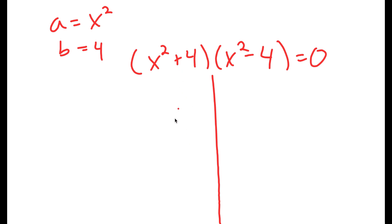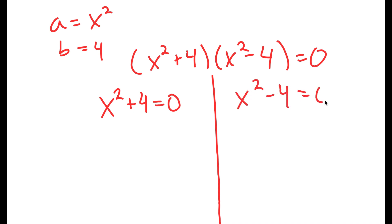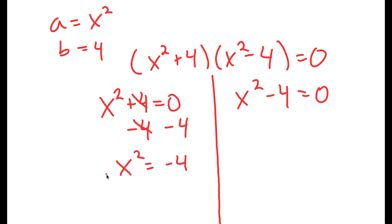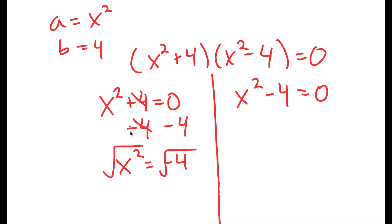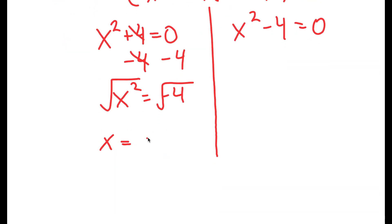Now I can divide this into two equations. I have x squared plus 4 is equal to 0, and x squared minus 4 is equal to 0. For x squared plus 4 equals 0, I'm going to subtract 4 on both sides, so I get x squared is equal to negative 4. And now I'm going to take the square root on both sides. The square root of x squared is simply x, so I get x equals the square root of negative 4.